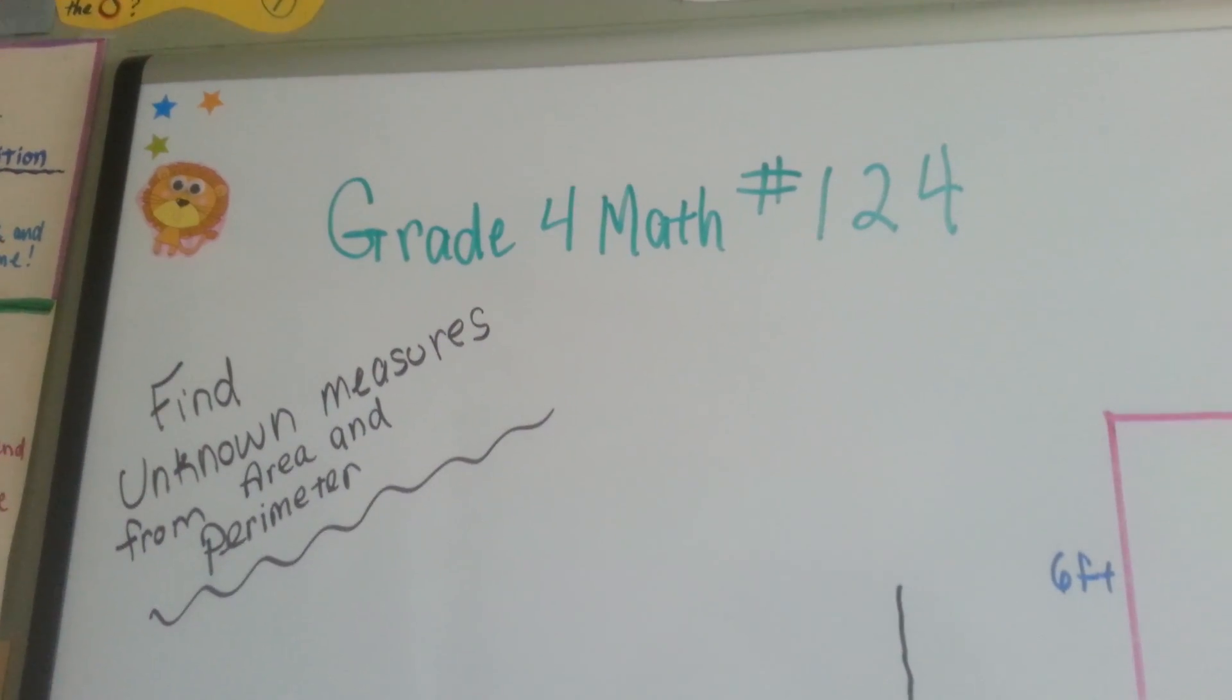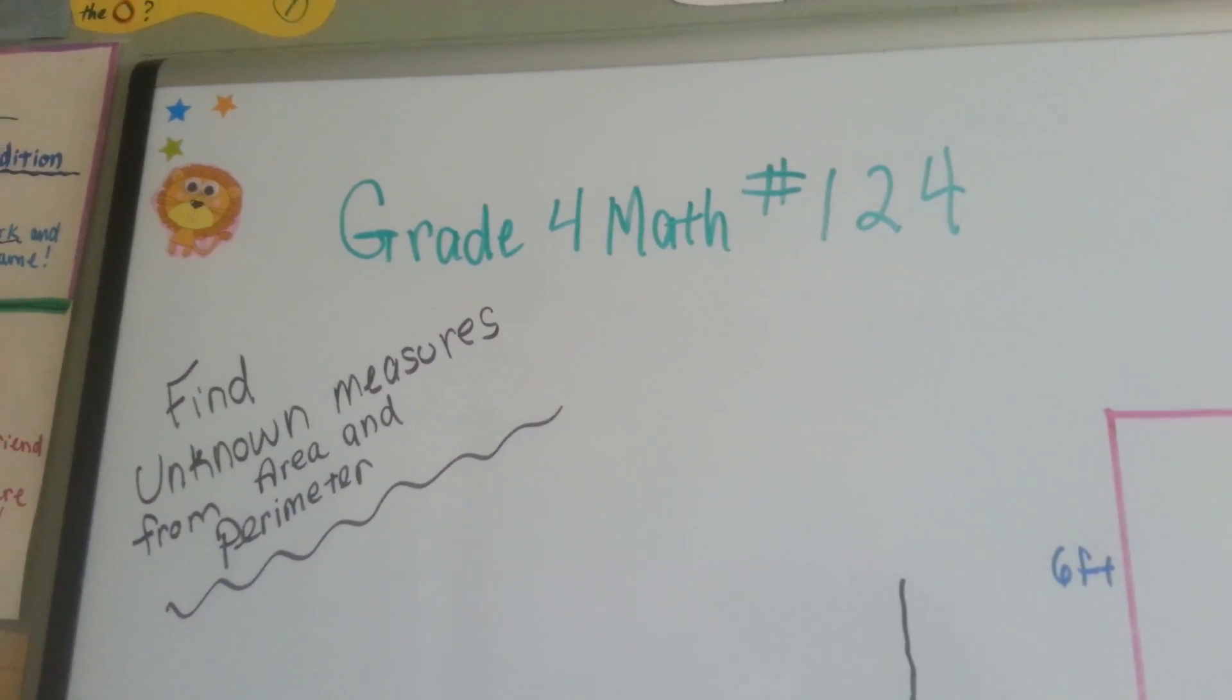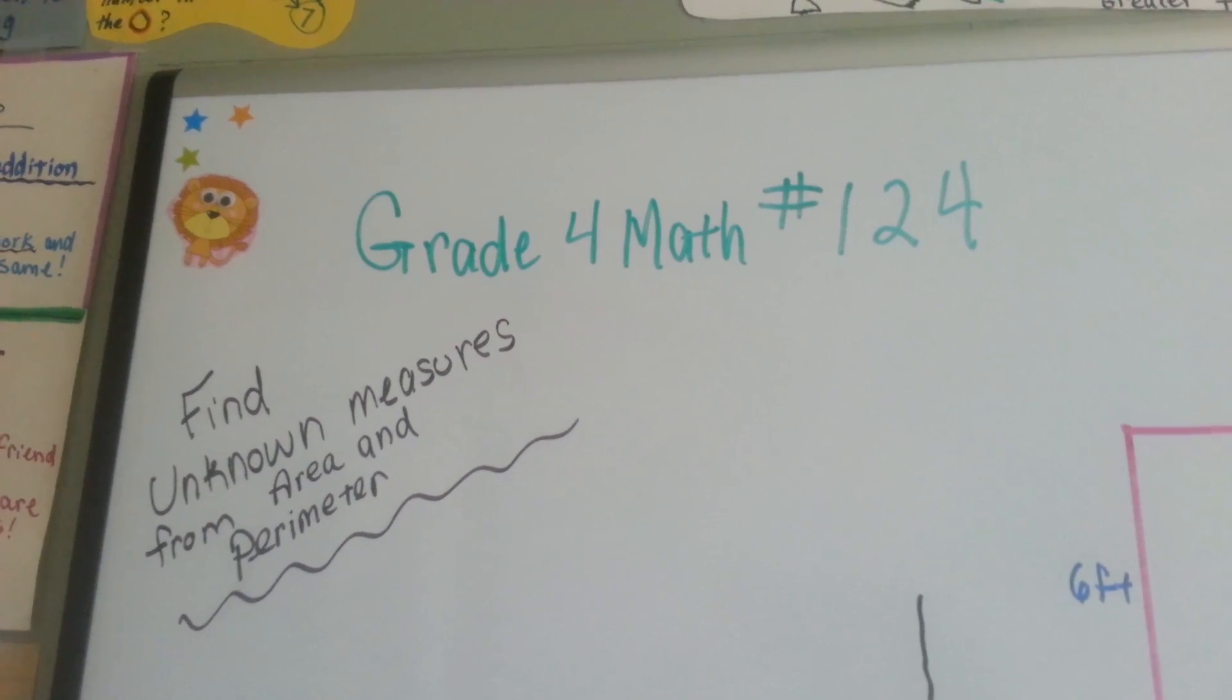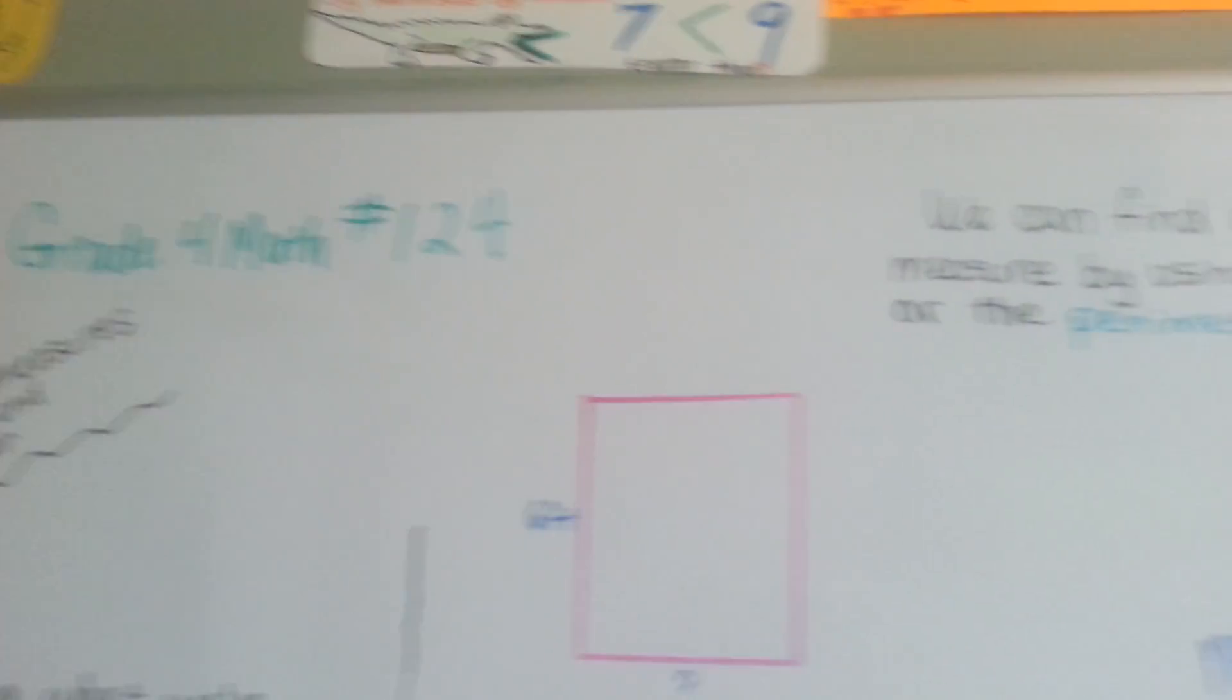Grade 4 math number 124. Find unknown measures from area and perimeter. Sounds like detective work again.